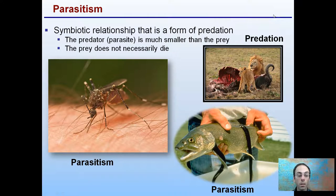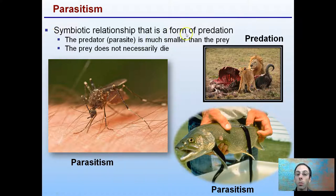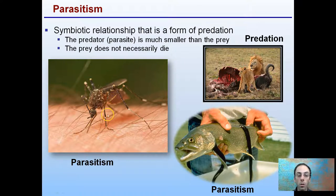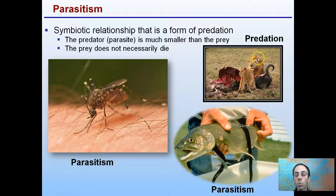In contrast, with parasitism: remember, a parasite is different from a predator. Parasitism is a symbiotic relationship in the form of predation where the parasite is much smaller than the prey, and the prey does not necessarily need to die. A prime example would be the mosquito — it attaches to your skin, pierces it, takes blood, and then leaves. That is a parasite. We have an example here of leeches on a fish. A true predator — like lions consuming their prey — actually kills it completely.